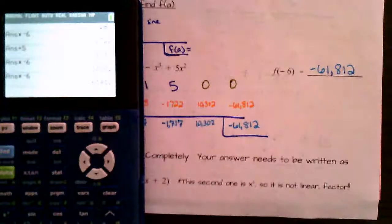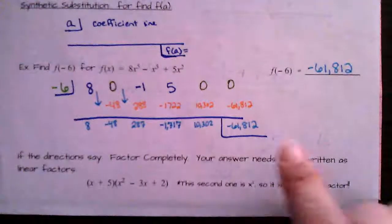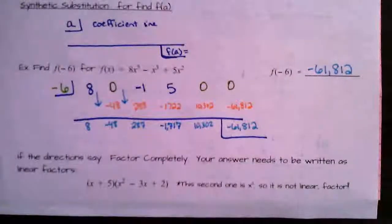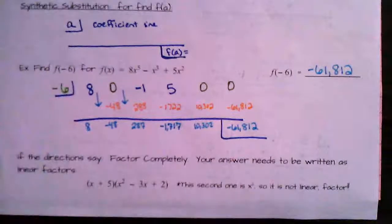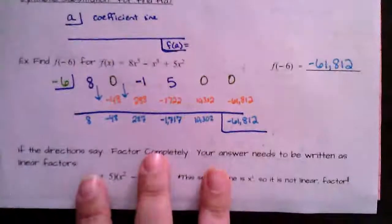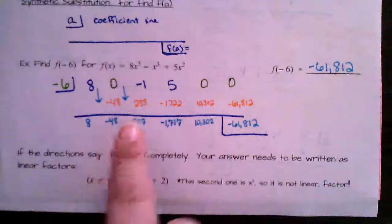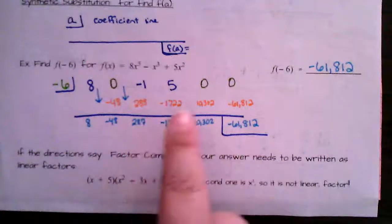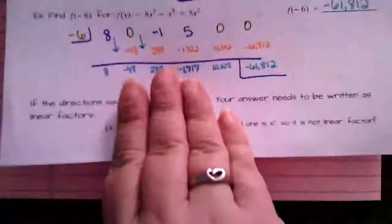Most answers won't be that large, but they can be. Whatever number ends up in that final box is your answer for synthetic substitution. You know you're doing synthetic substitution when you see 'f of a number.' Just move that number straight into the box and follow the same steps: drop the first, multiply by what's in the box, add, multiply, add, and so on.